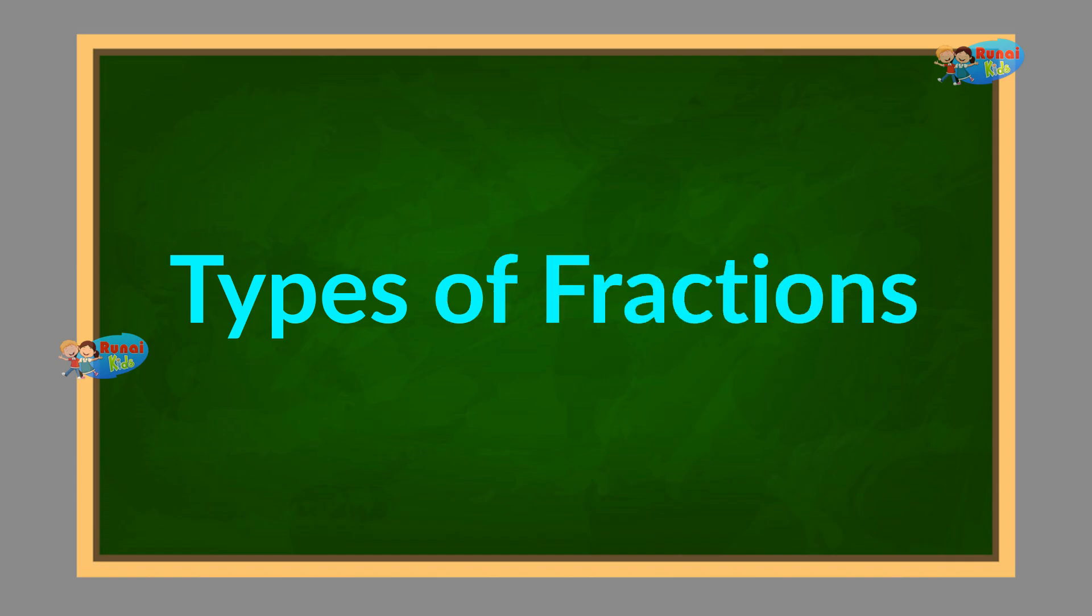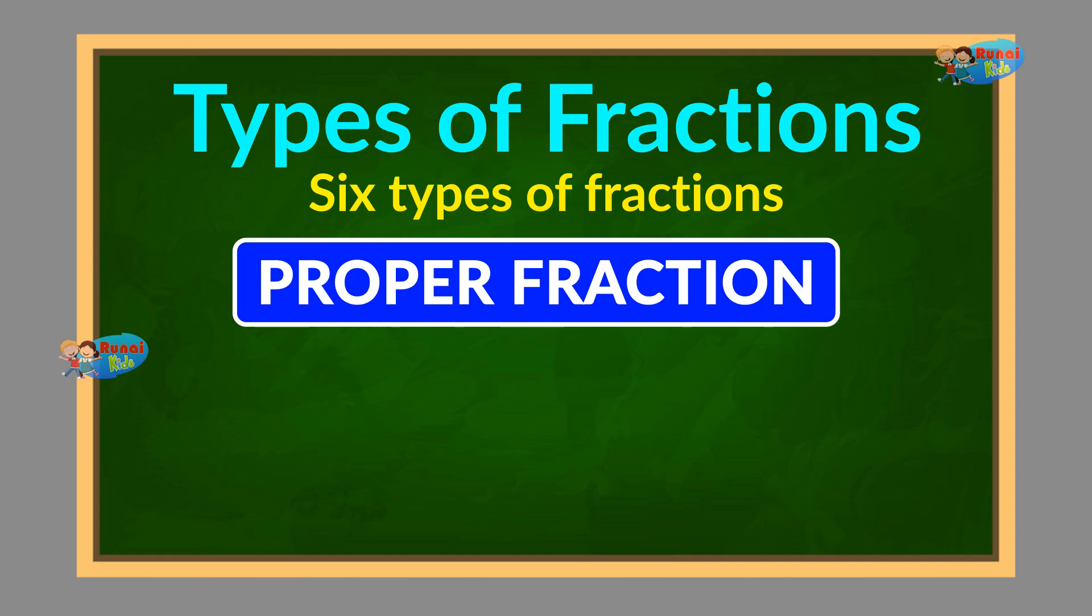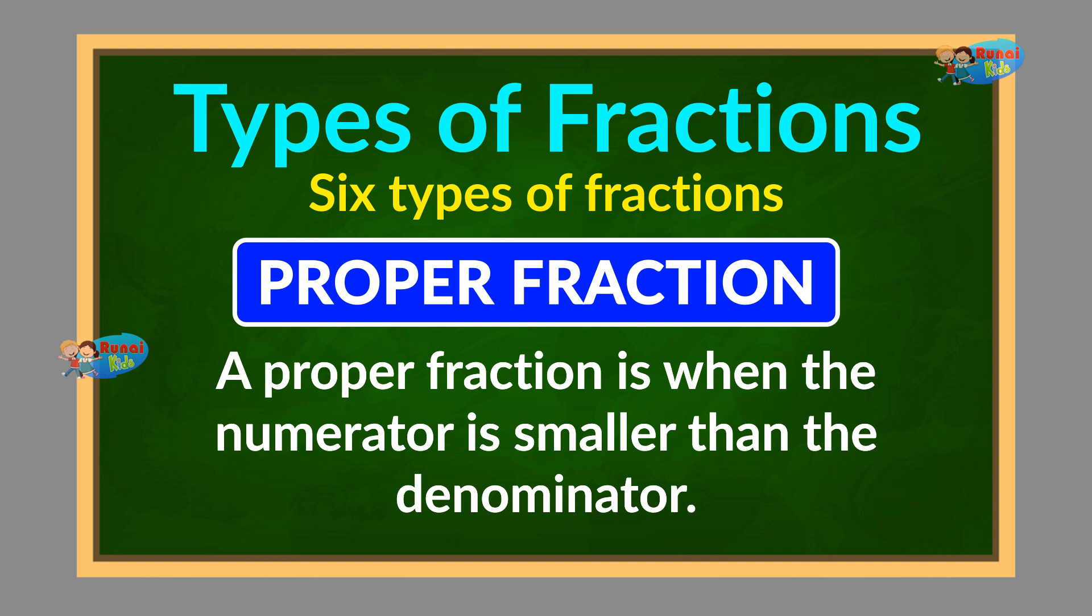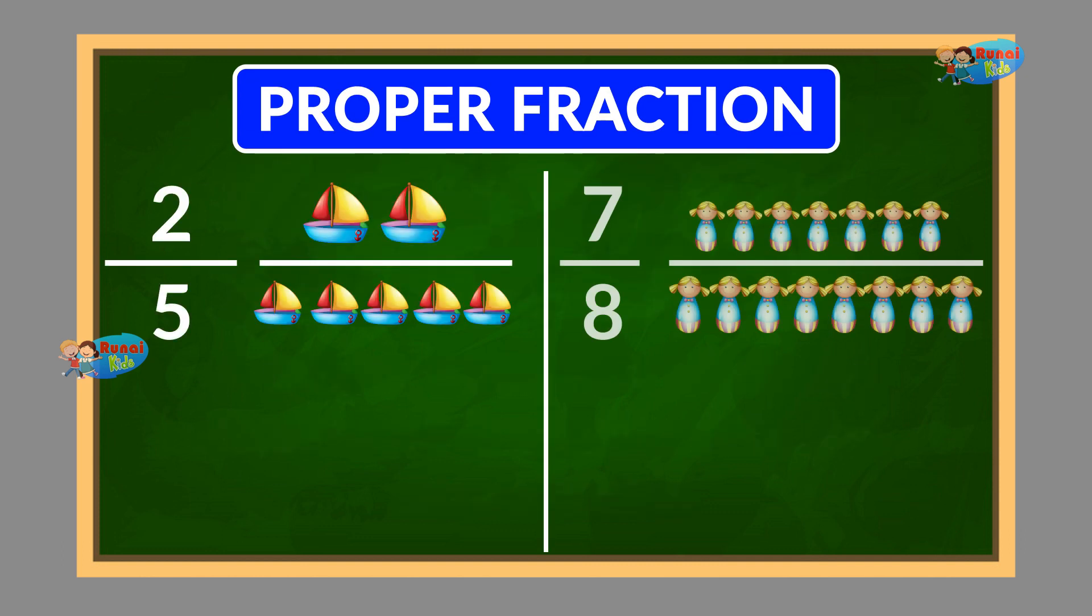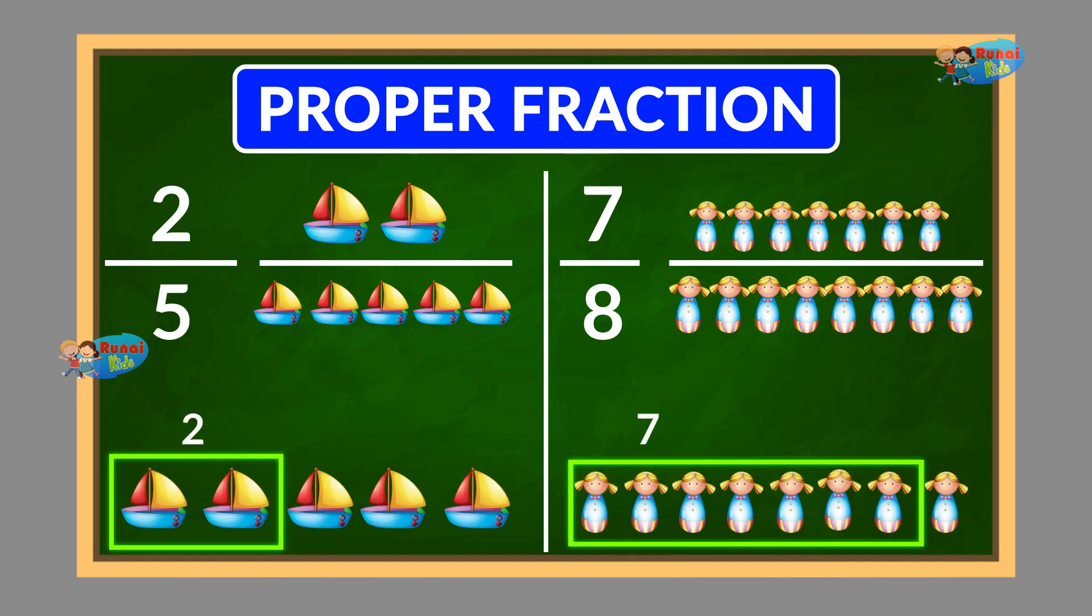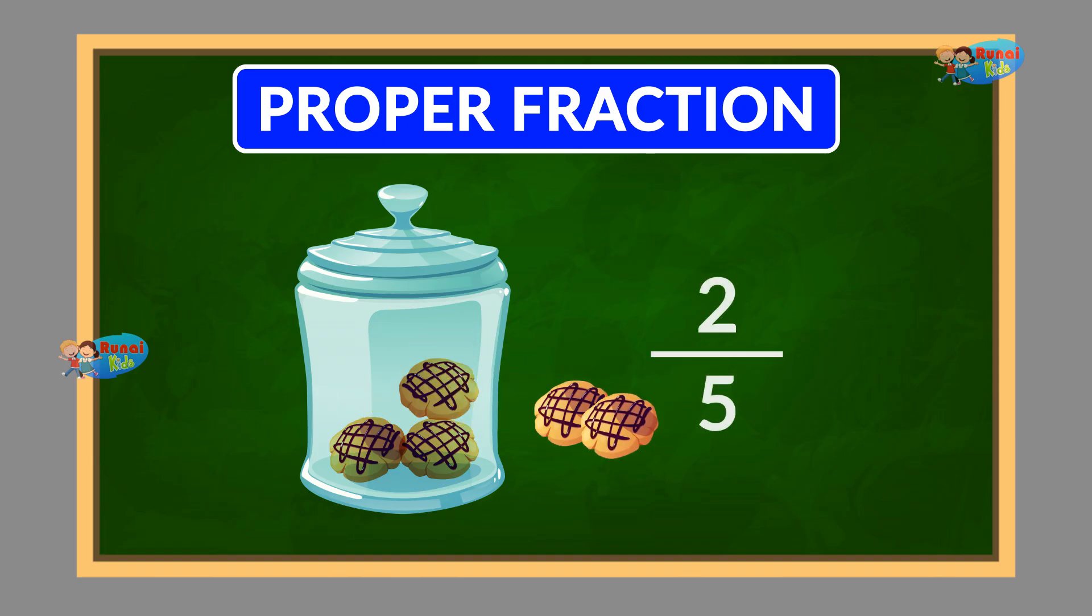Now, let's look at the different types of fractions. There are 6 main types you should know about. Proper fraction: A proper fraction is when the numerator is smaller than the denominator. For example, 2 by 5 or 7 by 8. These fractions are less than 1 because you are taking fewer parts than the whole. Think of eating 2 out of 5 cookies from a jar.